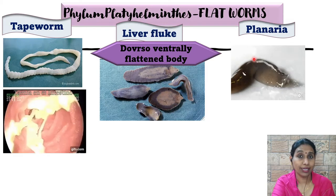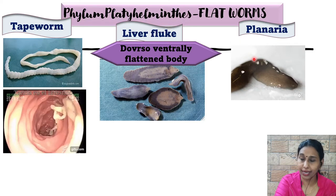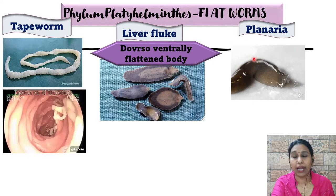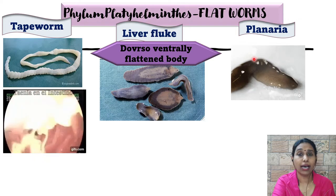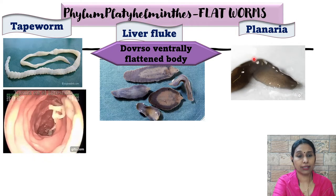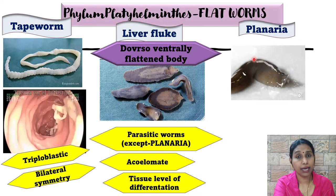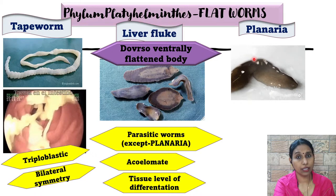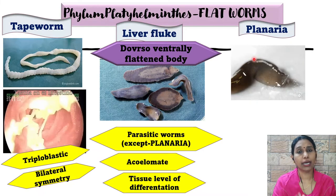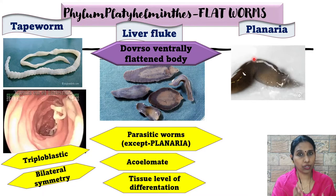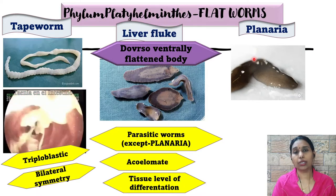Tapeworms are found in the small intestine. Liver flukes are also found in the small intestine, mostly in animals, but planaria is a free-living organism — it is not a parasite. Tapeworm and liver fluke both are parasites. They are triploblastic in nature, meaning the body has developed from a three-layered structure: ectoderm, mesoderm, and endoderm.